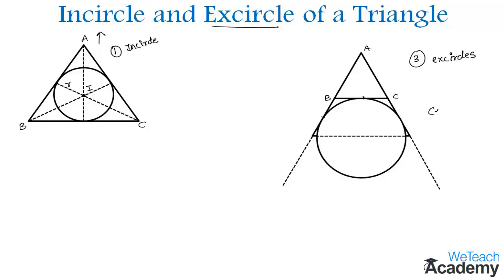Coming to the center of the excircle, the center is the intersection of the internal bisector of one angle and the external bisectors of the other two angles. This is the center of the excircle, represented by I₁, whereas the radius is represented as R₁.